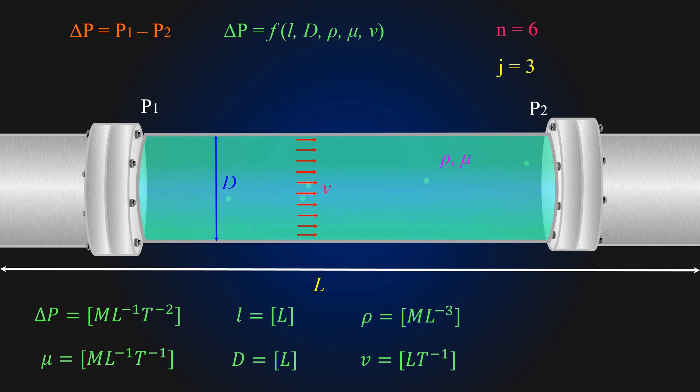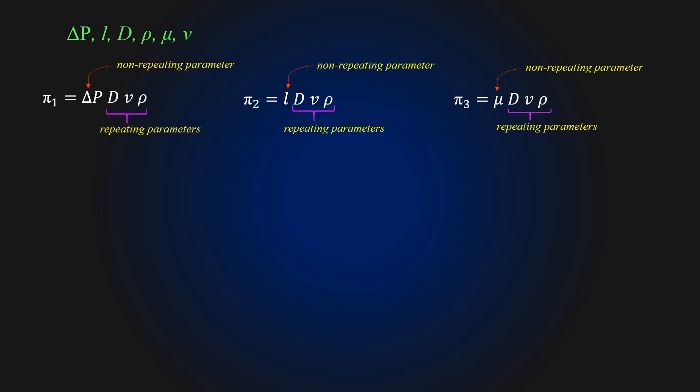In step three, we find the expected number of pies or non-dimensional expressions. It's n minus j equal to 3. In step four, we decide the j repeating parameters that will be used to construct each pie. Like here we decide capital D, V and rho as the repeating parameters in all the pie expressions. There are few guidelines to be kept in mind when selecting the repeating parameters.